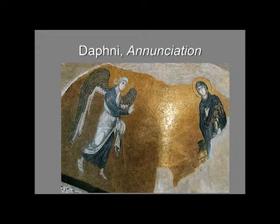One thing to realize when looking at these pendentive images: in a photograph they look flat, but use your imagination — this surface is curving, like the conch of an apse, with the slight curve of the pendentive. So the angel Gabriel is really placed across space from Mary, truly communicating to her across space rather than in a completely flat image. Each image is portrayed with flatness, yet they exist in an actual three-dimensional architectural space.